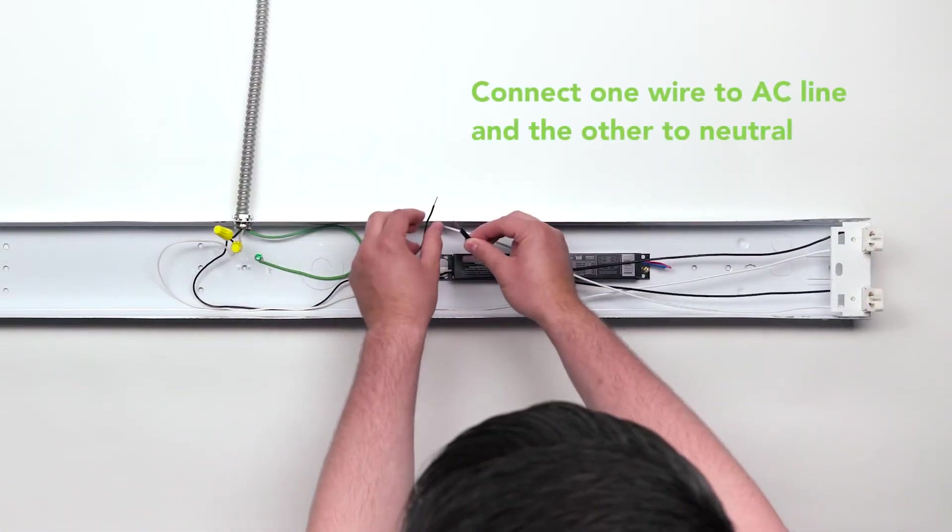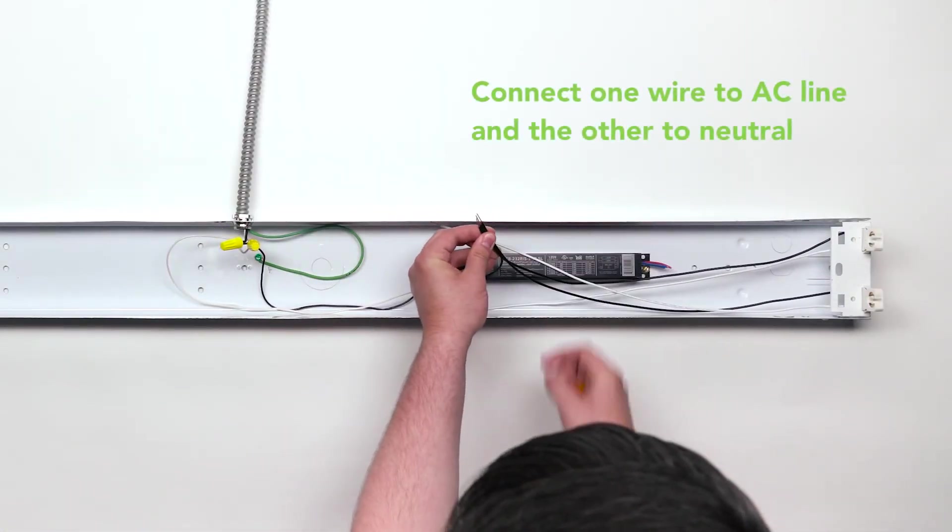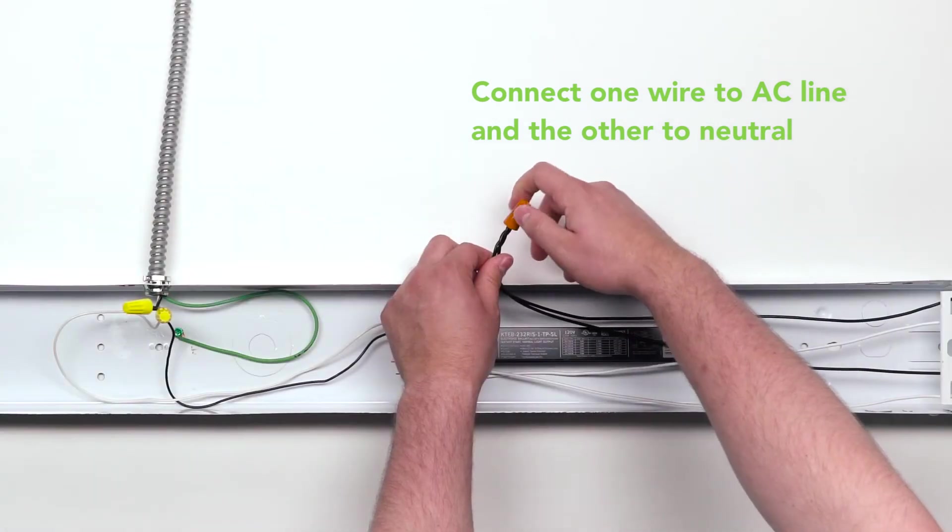For each powered lamp holder, connect one wire to AC line, or hot wire, and the other to neutral using the provided wire nuts.